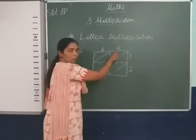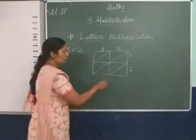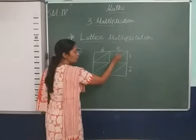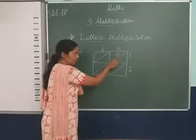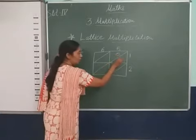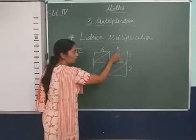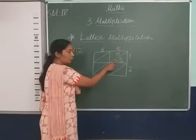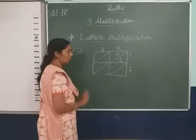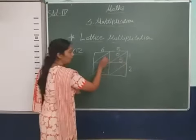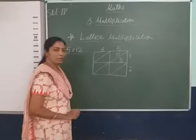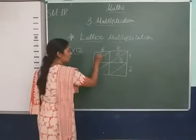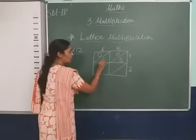1 into 5 equals 5. 0 will come here because of the tens, tens place 0 and here 5. 1 into 5, 5. We put the product in diagonal. Now next 1 into 6 equals 6. Again 0 we will put here and write the product 6.